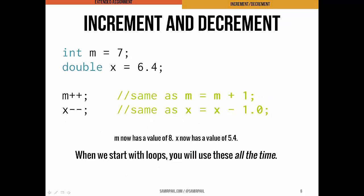Another nifty thing we can do is use the special increment and decrement operators. So if I start with a variable m has a value of seven, I can do m plus plus, and that's the same as m equals m plus one. Likewise, I can do m minus minus, and that's going to be the same as m equals m minus one. Works the same way with a double. This one is x, starts with a value of 6.4. If I do x minus minus, that's like I'm doing x equals x minus 1.0, and I'm left with a value of 5.4. You're going to use these two in particular all the time once we start working with loops a little bit more.